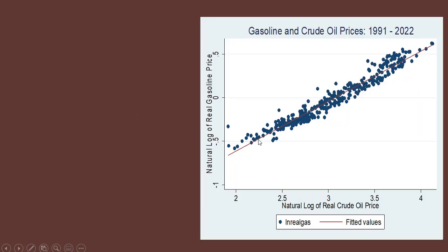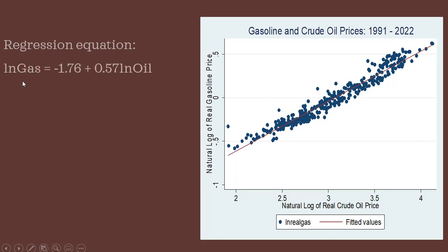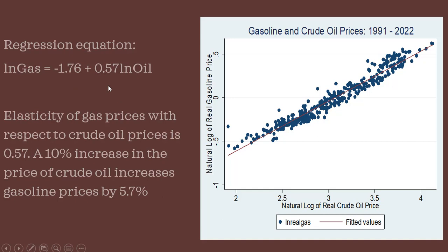Here's a scatter plot of gasoline and crude oil prices, monthly over this time period, 1991 through 2022. This red line here — this line of best fit, or fitted values — is our regression equation. The key thing of interest here is the coefficient on the natural log of oil, this 0.57.